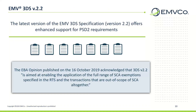The latest version of the EMV3DS specification, version 2.2, offers enhanced support of PSD2 requirements. This specification includes support for PSD2 exemptions, which allows merchants to communicate to issuers that SCA may not be needed and has already been achieved for that transaction. For example, a merchant may request a low value exemption to the issuer as part of the 3DS authentication process.